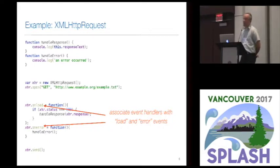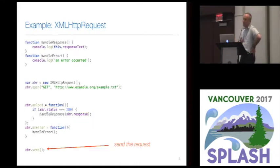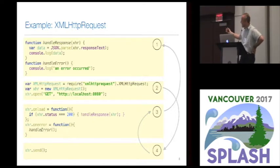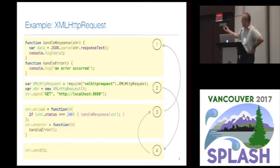Very importantly, we have to associate event handlers with the load and error events and make sure that when that happens, the handle response and handle error functions at the top will be invoked. And lastly, we call send on the HTTP request object in order to send a request. After you have created the request, registered the event handlers, and sent the request, after some time a response will be received. Let's assume the load event will be received, which will trigger the onload event handler and invoke the handle response function.